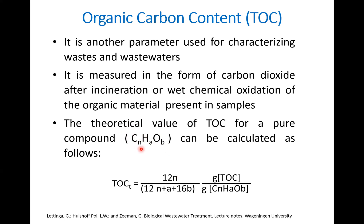To calculate TOC theoretically, you take the number of carbon atoms (n) multiplied by the molecular weight of carbon (12), then divide by the molecular weight of the entire compound — which is 12 times n (carbon) plus a times 1 (hydrogen) plus b times 16 (oxygen). This gives you grams of TOC per gram of organic matter.